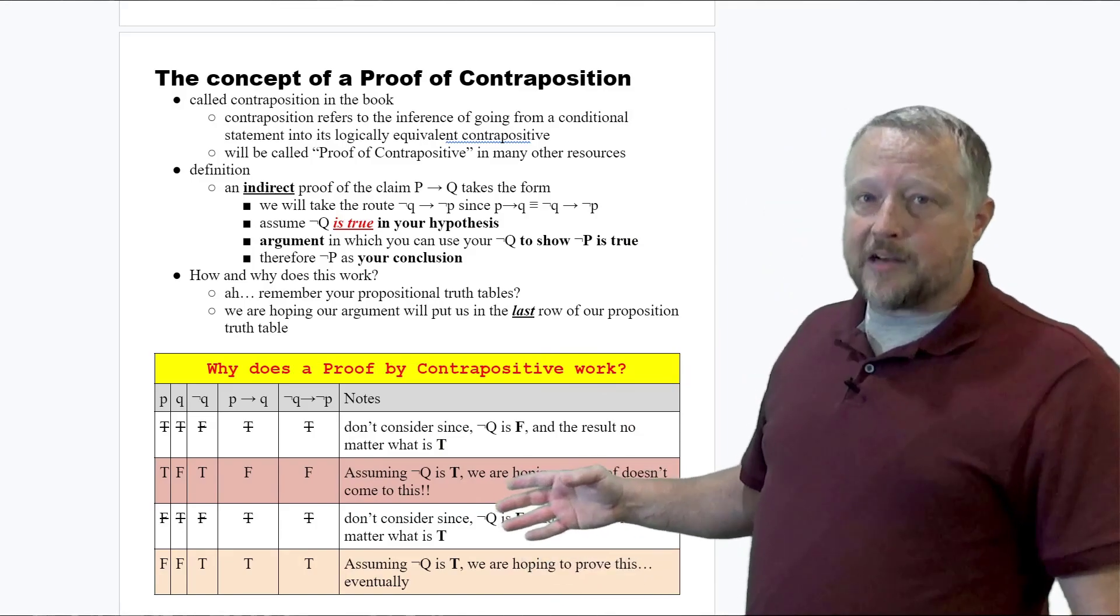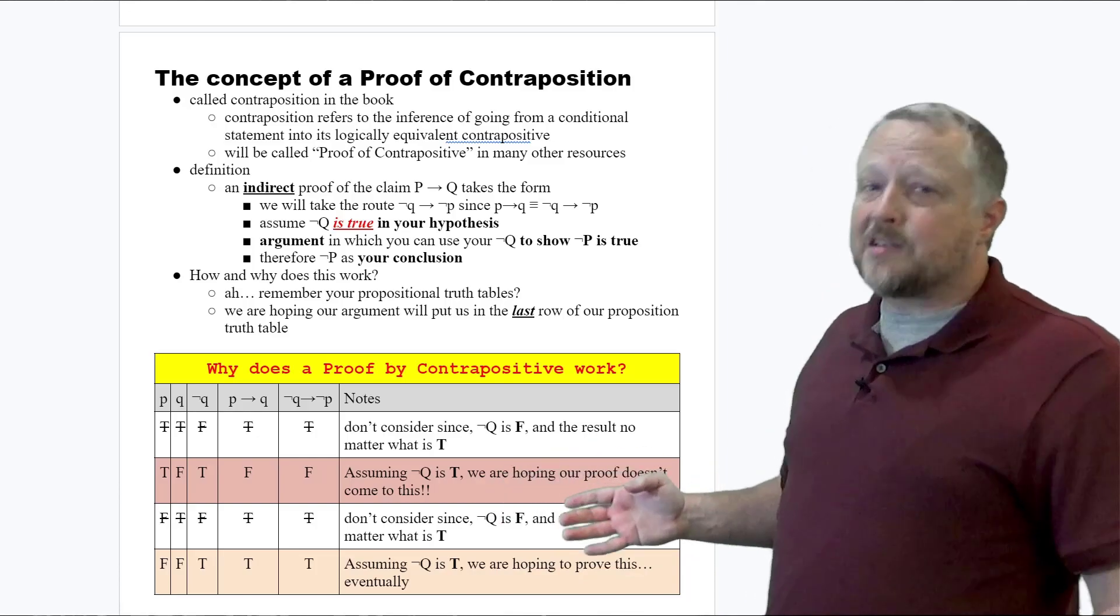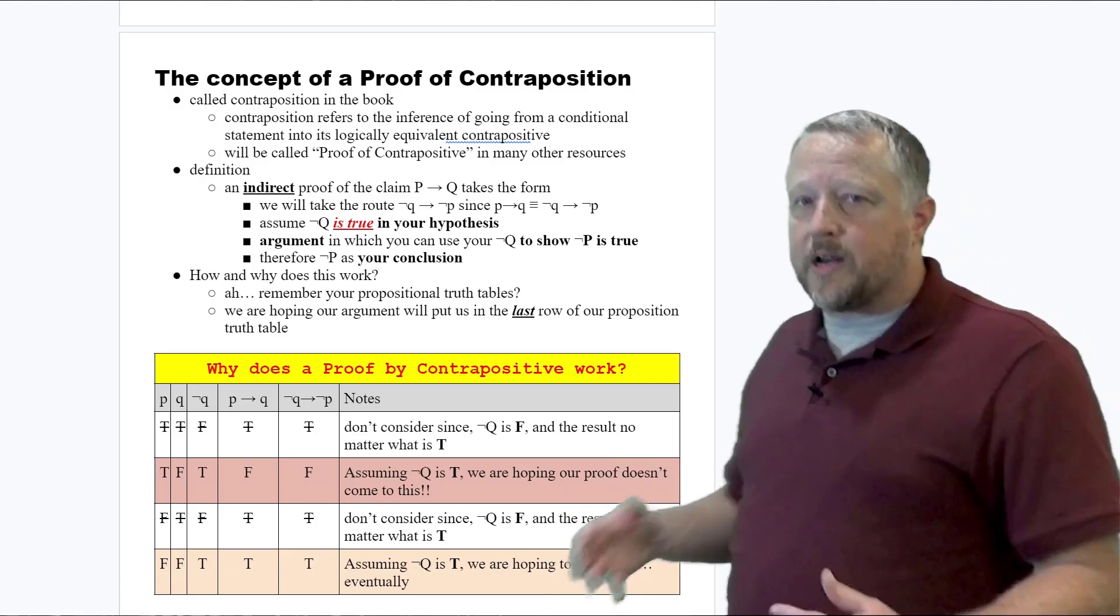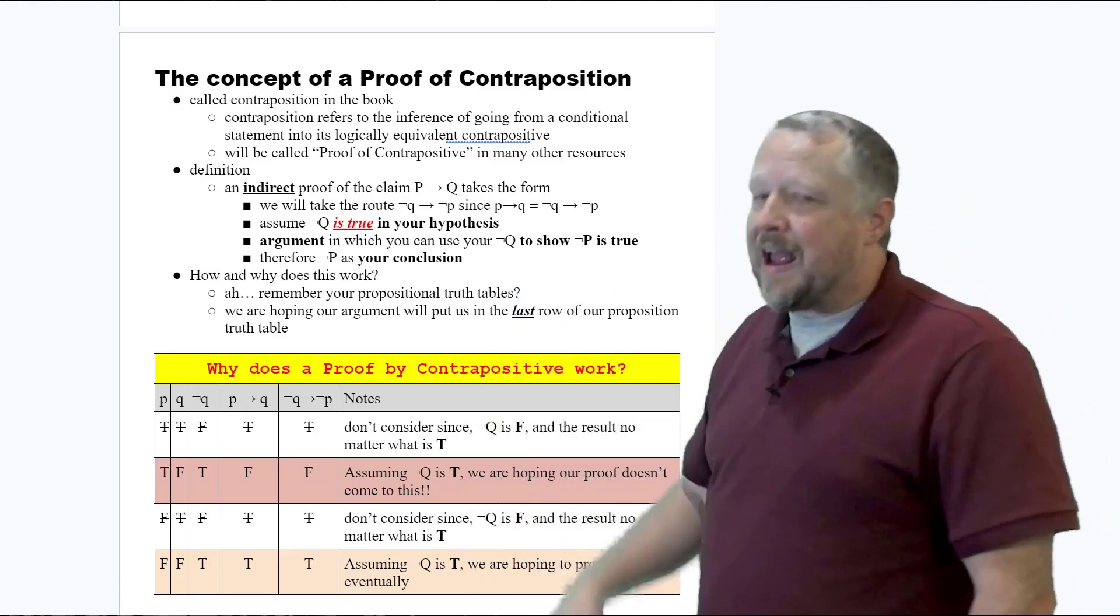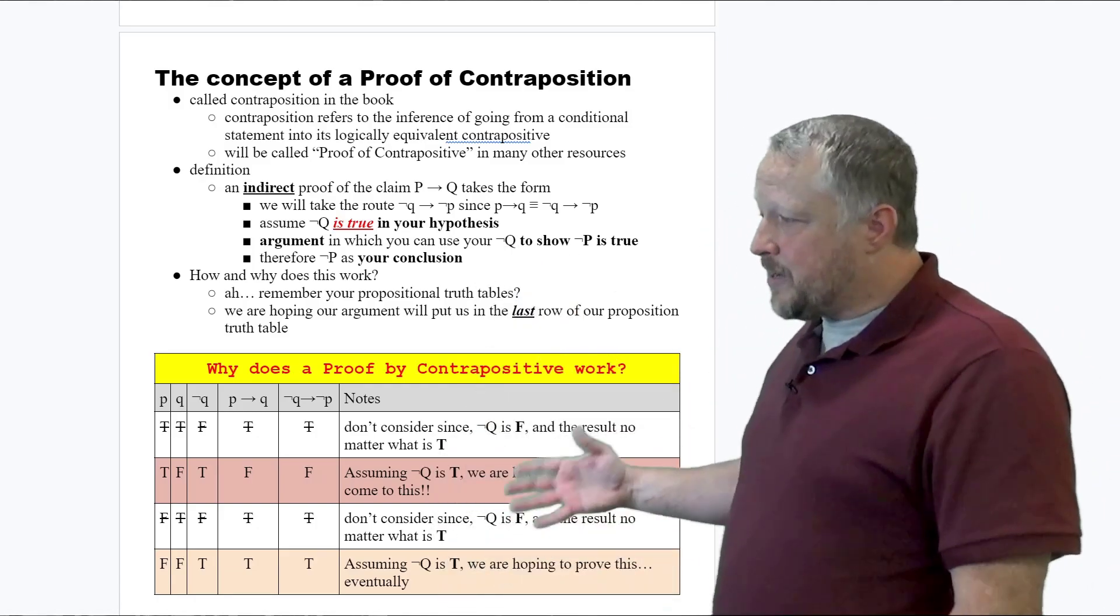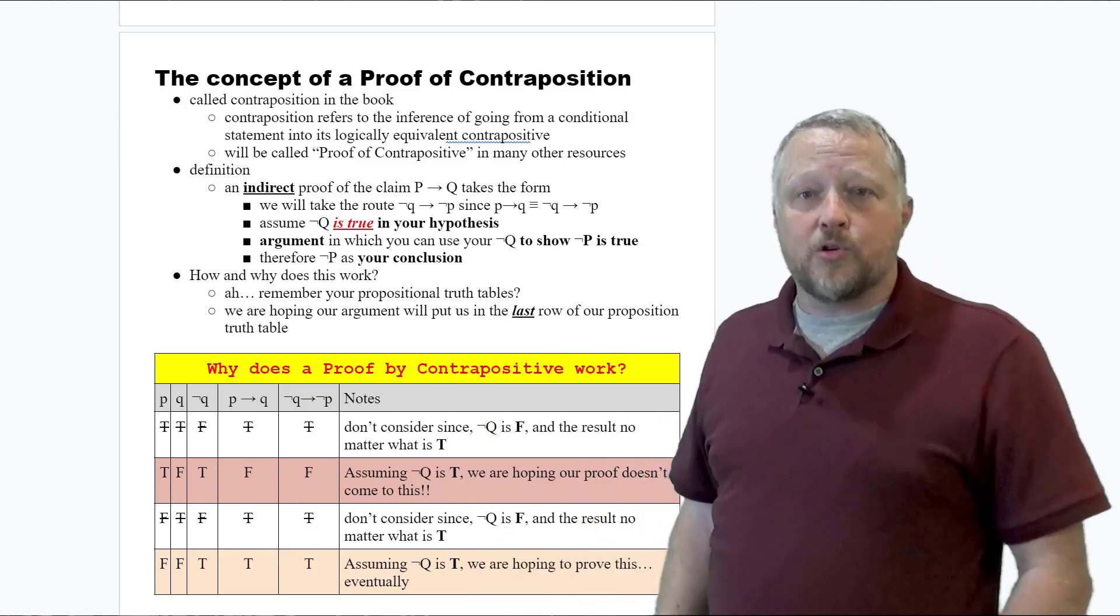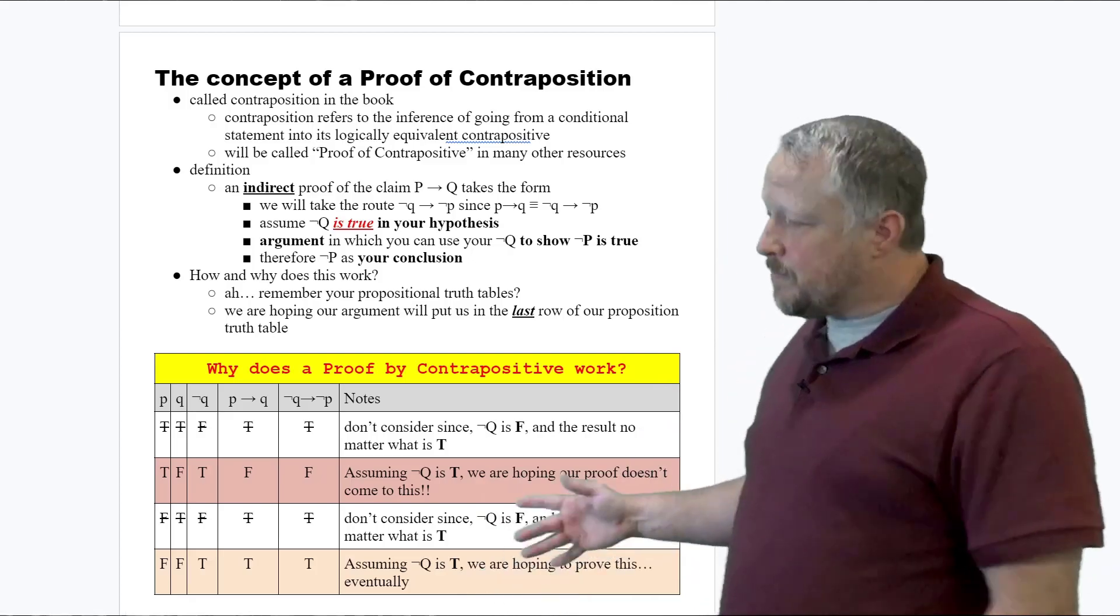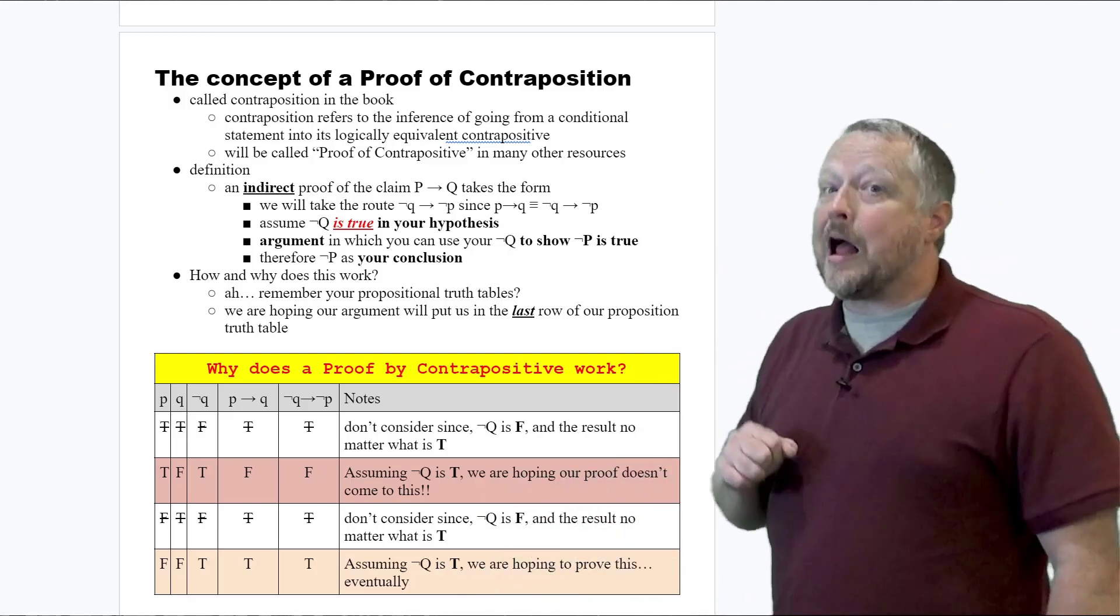You know what's coming next. This is what we hope it doesn't happen, but it does happen once in a while, where we just can't prove our negated P for our second half of our equation, and that means we can't do our conclusion that we found that we can prove it to be true. It does happen, but this is the one we're hoping not to have.